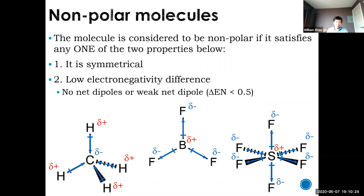Imagine the bonds as force vectors — like three donkeys pulling a cart in those three directions. All the forces cancel out exactly; you have a net zero force and the cart doesn't move. So despite having polar bonds, BF₃ is nonpolar. Same thing with SF₆: all the force vectors point in opposite directions and cancel, giving a net dipole of zero. Despite having polar bonds, you have a nonpolar molecule.